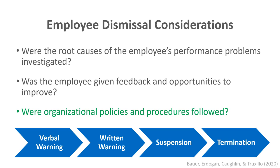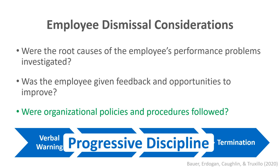Third, were organizational policies and procedures followed? This refers to a progressive disciplinary action process — first a verbal warning, then a written warning, then a suspension due to continued performance problems, then termination if problems persist after returning from suspension. This progressive disciplinary plan should be clearly laid out in the organization's policies or handbook. Of course, if an employee's behavior is egregious, unethical, or illegal, the organization may jump straight to termination without a warning.